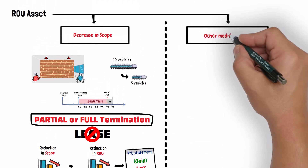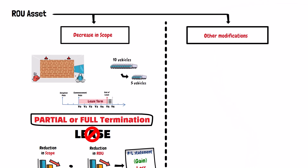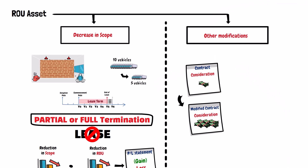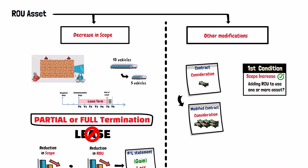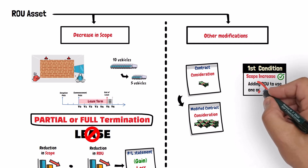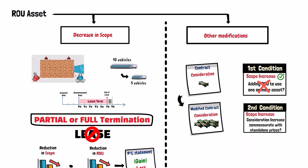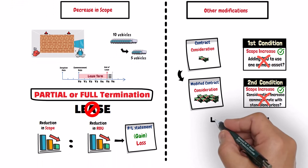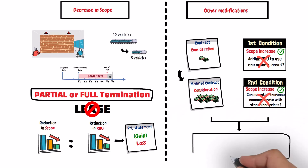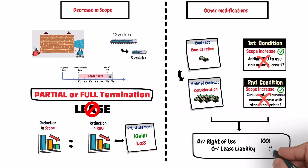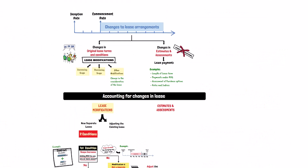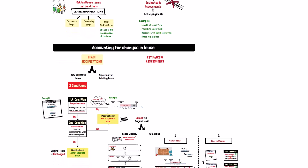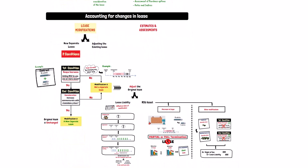For any other modifications — such as modifications that change the consideration of the lease, or that increase the scope of the lease but without adding a right to use an additional asset, or that increase scope without a commensurate increase in consideration — you need only to make a corresponding adjustment to the right-of-use asset in the same amount as the adjustment made to the lease liability. Now, let us illustrate with a few examples in the following lecture.